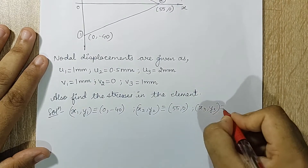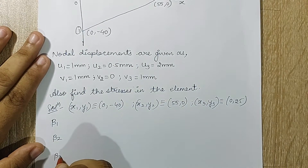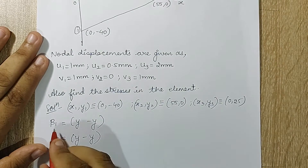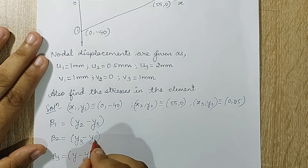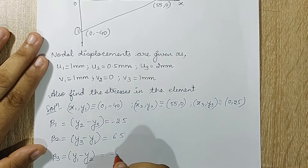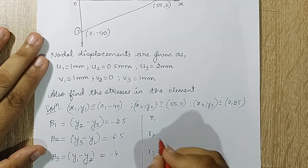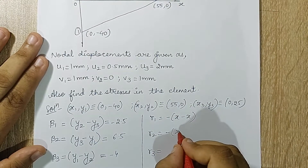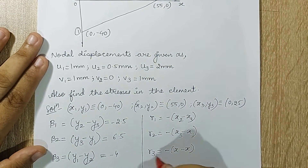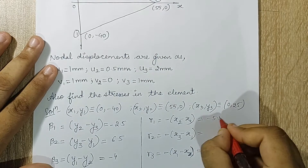Now I can calculate the values of β1, β2, β3. We already know the formula — it is the y-minus-y terms. Solving for β1, β2, β3 with the cyclic subscript pattern 2-3, 3-1, 1-2, I get −2.5, 6.5, and −4. Next, for γ1, γ2, γ3, this is the negative difference of x terms, using the same cyclic pattern, and I get −5.5, 0, and 5.5.